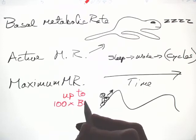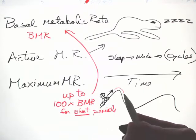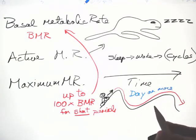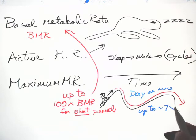It's up to 100 times basal metabolic rate for short periods. If we tracked our Tour de France rider for a day or more, that maximum is up to seven times basal metabolic rate.